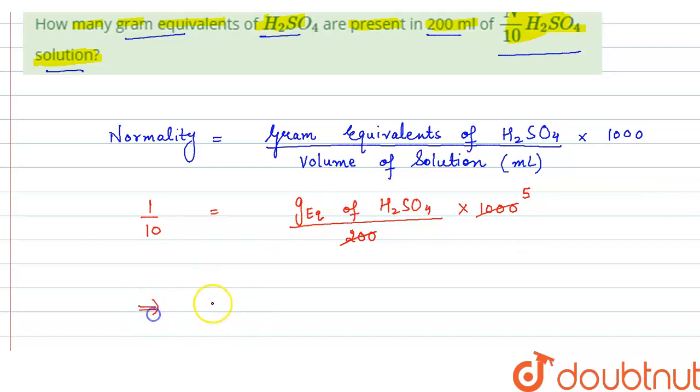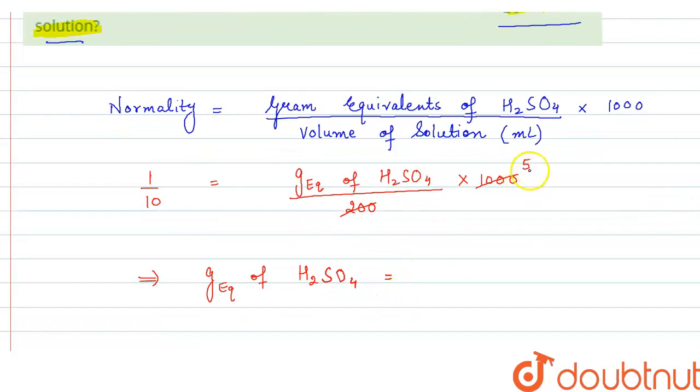So, from here gram equivalent of H2SO4 will be equal to 5 will come here in denominator. So, we get here 1 by 10 into 5. So, it will be equal to 1 by 50 and it is equal to 0.02 gram equivalent.